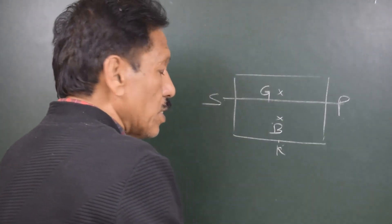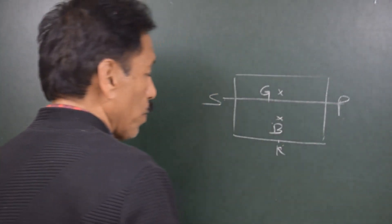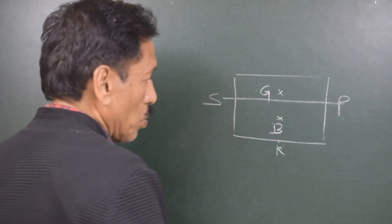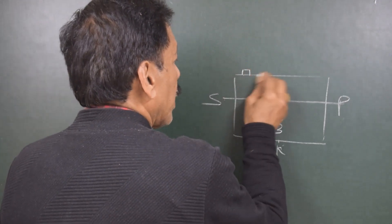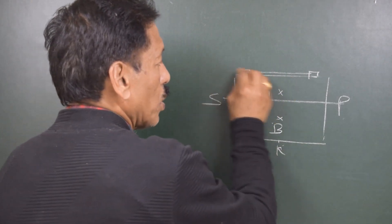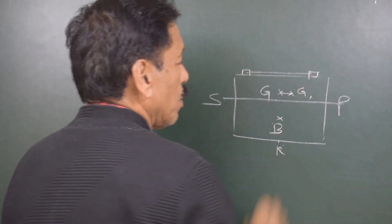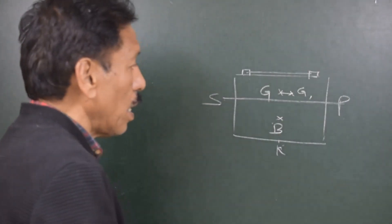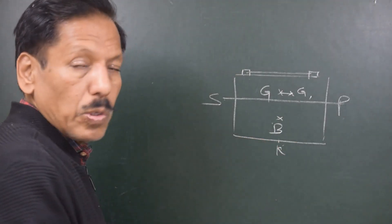Equilibrium means that the center of gravity will also shift to a position G1. Because of this shift, the ship would get listed.